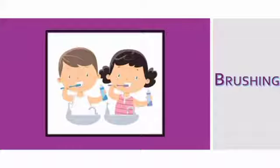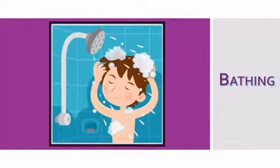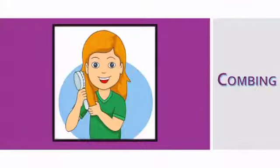What is the little one doing? Crying. The little one is crying. What are these two kids doing? Brushing — they are brushing their teeth. What is the boy doing? Bathing — he is bathing.